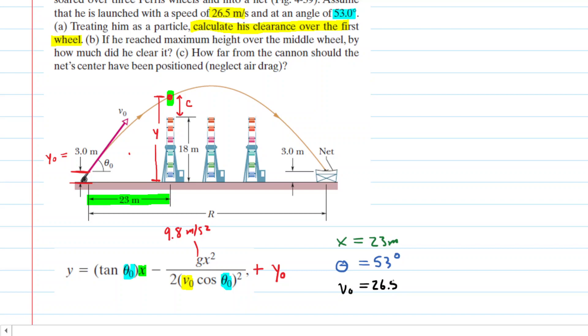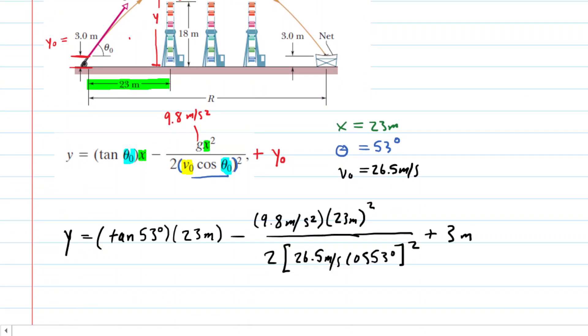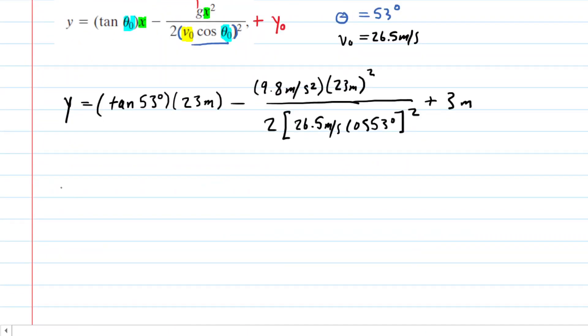We'll plug in all the known data. Don't forget that X also appears here and needs to be squared. This term V naught cos theta naught needs to be in parentheses because that whole term also needs to be squared. When we calculate Y, we should get approximately 23.3 meters.